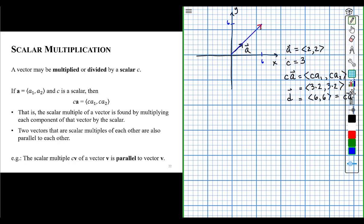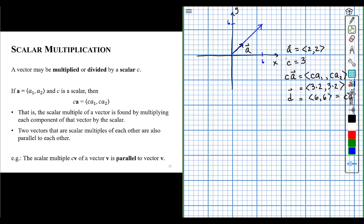And notice something about those two vectors. Notice that those two vectors are parallel to each other. See that there? They lie along the exact same line. The only difference between those two vectors is vector d is 3 times longer than vector a.